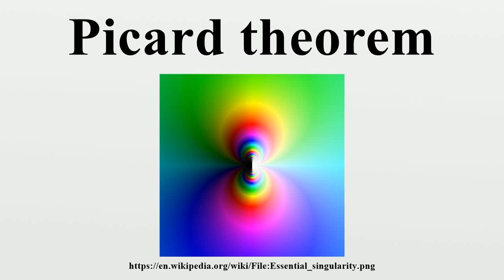With this generalization, Little Picard's theorem follows from Great Picard's theorem because an entire function is either a polynomial or it has an essential singularity at infinity. As with the little theorem, the points that are not attained are lacunary values of the function. The following conjecture is related to Great Picard's theorem.